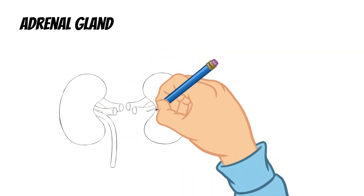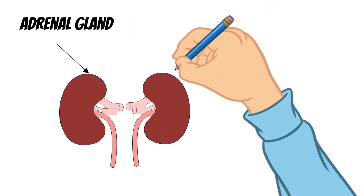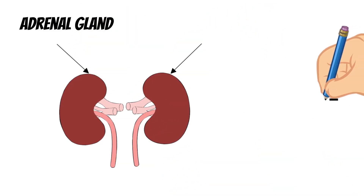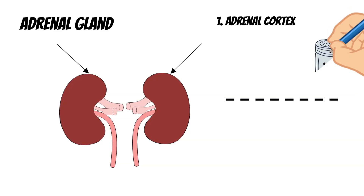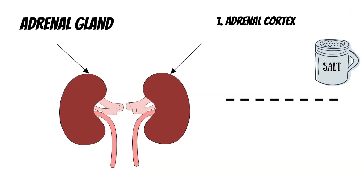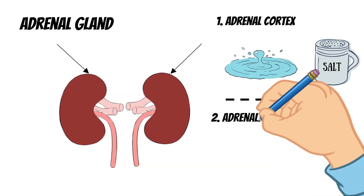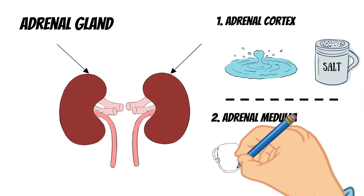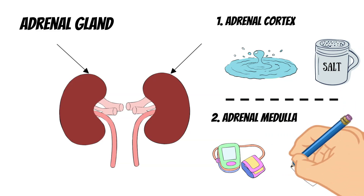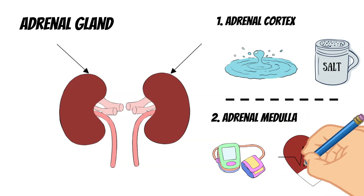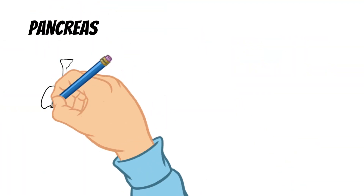The adrenal glands are located on top of your kidneys, one on each. They are divided into two parts: the outer part, called the adrenal cortex, controls the mixture of salt and water in the body. The inner part, called the adrenal medulla, makes hormones that raise your blood pressure and heart rate when your body is under stress.